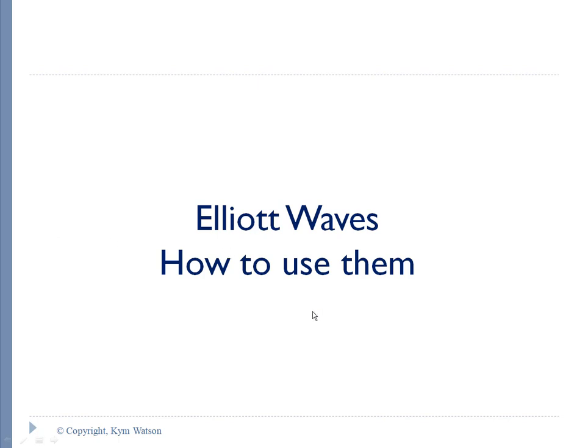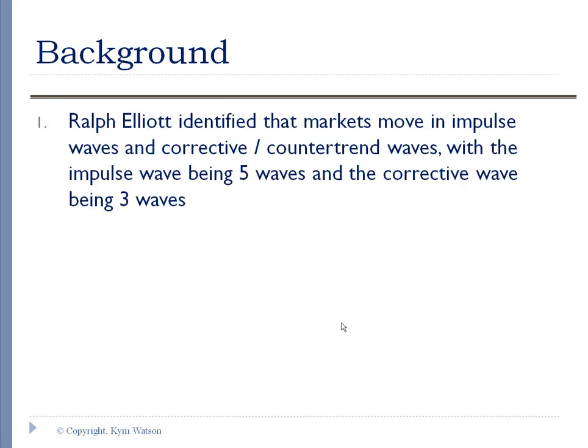This gives you a little bit of background. Ralph Elliott identified that markets move in impulse waves and corrective countertrend waves, with the impulse wave being 5 waves and the corrective wave being 3 waves. So he discovered these patterns. They're quite natural in many things that we look at. You could look at the sea and you'll see different waves. There's no real difference in how the markets work in these harmonic waves.